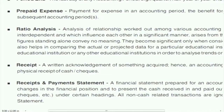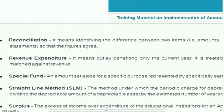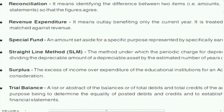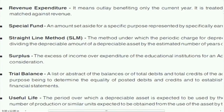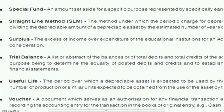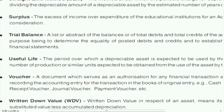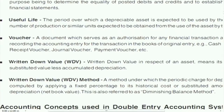Reconciliation: reconcile any account — debtors, creditors, bank — to ensure whatever entries you make match what others make. Reconciliation and confirmation are must in business. Revenue expenditure and special funds were also discussed. Straight line method was discussed under depreciation. Useful life: furniture may have a useful life of 10 years; a computer may have only 3 years — it depends on the nature of the asset.